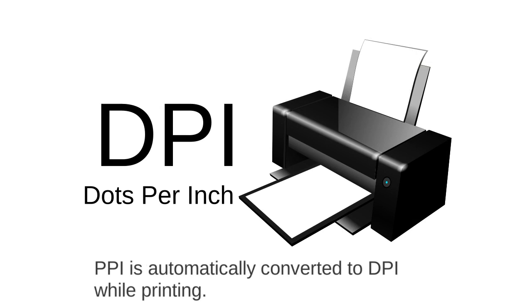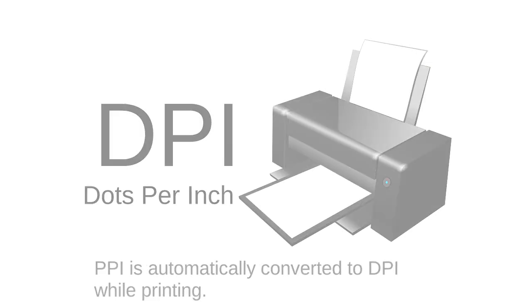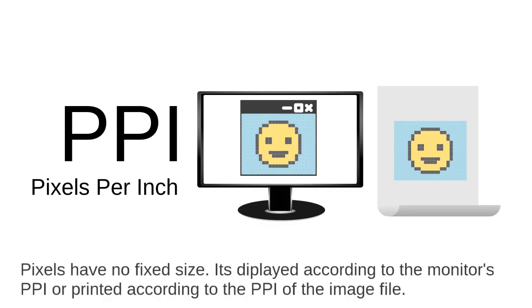This is PPI — pixels per inch. If we have a PPI value, we will have a measure of display or print density. PPI tells us how many pixels fit into one inch of screen or print.